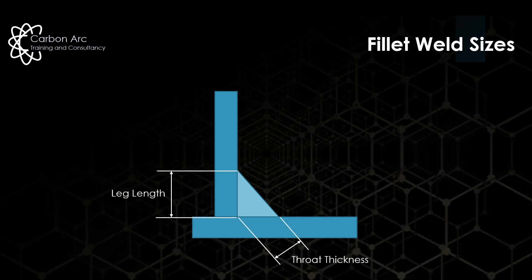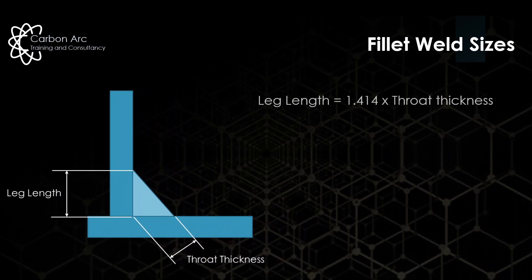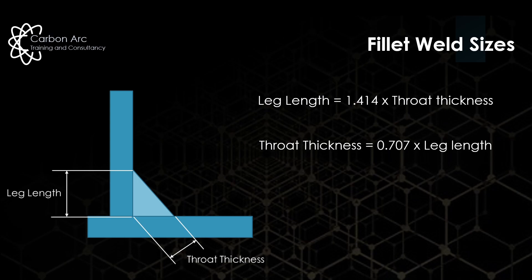Here we're looking at leg length and throat thickness, and because this is a triangle, we can take leg length and calculate throat thickness, or take throat thickness and calculate the designed leg length. The equation for leg length is 1.414 times your throat thickness, and throat thickness equals 0.707 times your leg length. They calculate back and forward between each other to give you your designed values — it might not be what you've measured, but it's what the drawing intended.